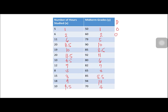Next, we get the difference D between the ranks. The differences are: 0, 0, 0, 1, 1.5, 1.5, 0, 0, 0.5, 3, and 0.5.